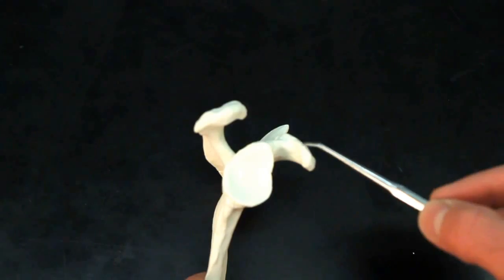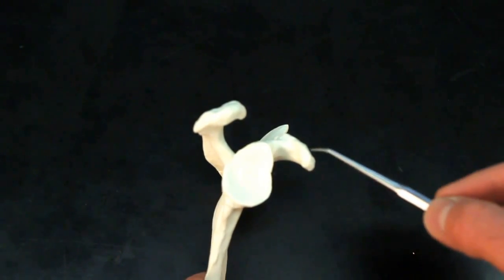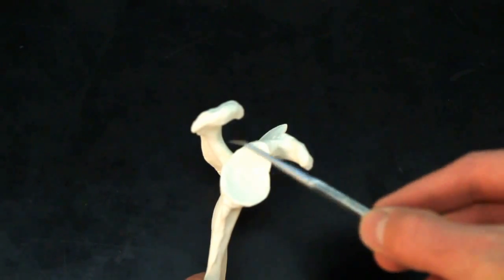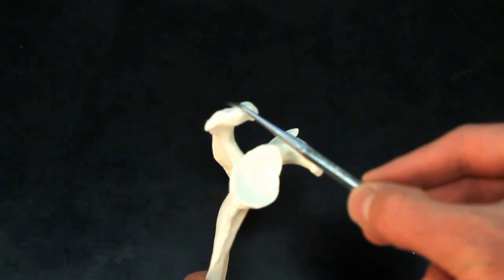This, which is on the anterior portion of the scapula, is the coracoid process. While this, which is more superior and posterior, is the acromion process.